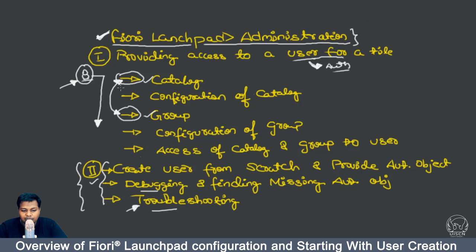For the first part, we will be doing practicals required to give any tile — basically application access — to our user. The steps we need to follow are: first, create the catalog and configure it; then create the group and configure it; and finally assign the catalog and the group together to create the tile. We also have to give specific authorization to the user.